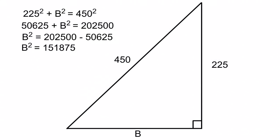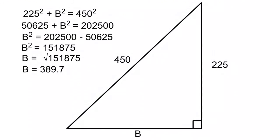We're getting closer to our answer. B squared is equal to 151,875. As before, we need to get rid of the square, so let's square root both sides. B is equal to the square root of 151,875. Punch that into your calculator and we get our answer of 389.7. So we have determined that 450 squared minus 225 squared gives us 389.7 squared — that has determined the size of b.